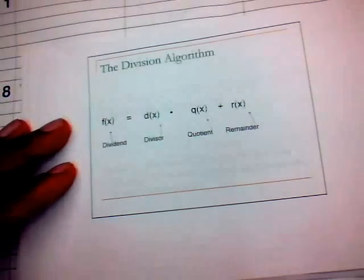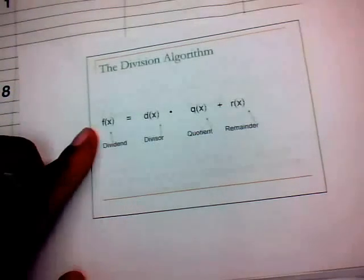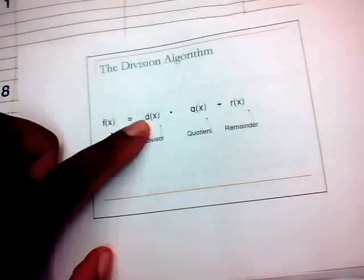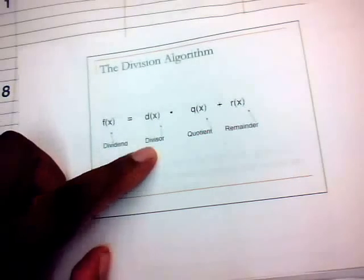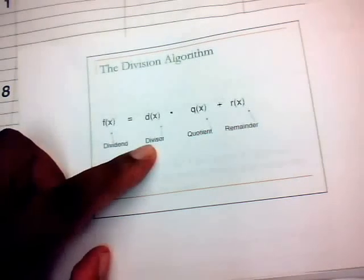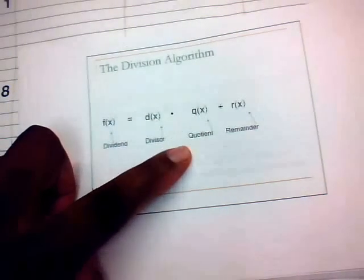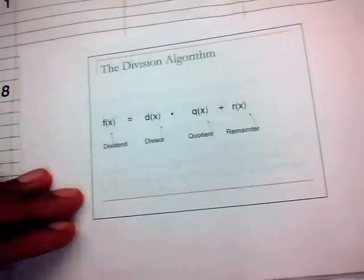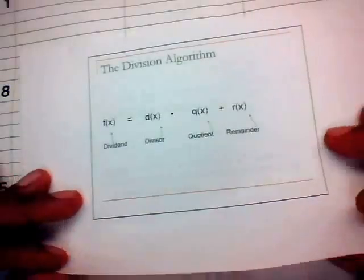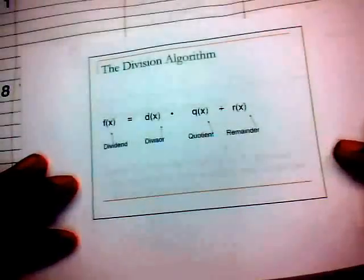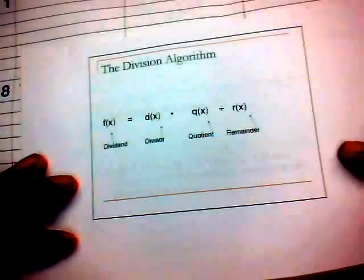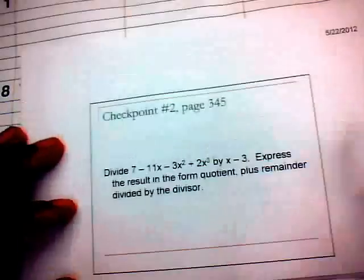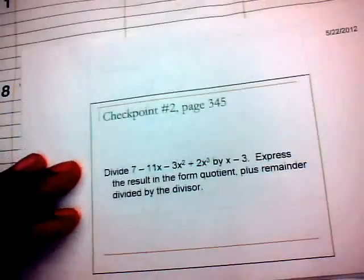The division algorithm states that f of x, which is your dividend, equals d of x, the divisor, multiplied by q of x, the quotient, plus r of x, which is your remainder.